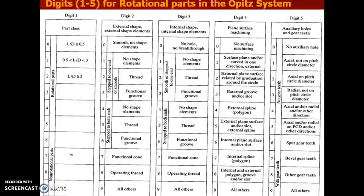Going into detail about the rotational parts in the OPITZ system: if a component is a rotational part with an L/D ratio less than or equal to 0.5, then the first digit is 0. If the part is a stepped part with a thread, then digit 2 is 2. For the internal shape, if there is a functional groove, digit 3 is 3. If there is a thread as an internal shape, digit 3 is 2. Digit 4 indicates whether surface machining is needed. Digit 5 covers auxiliary holes and gear teeth required for that component.